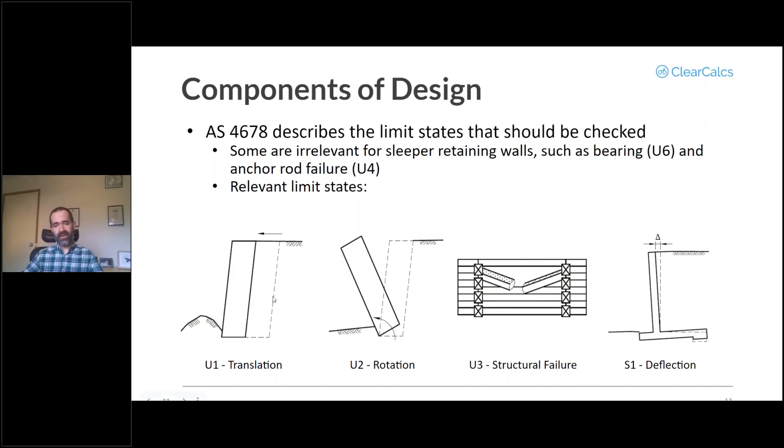So the relevant limit states here are your geotechnical limit states of translation, the whole retaining wall moving to the side, rotation - we already saw one failure mode of that with the retaining wall tilting forward. You'd have structural failure in either the sleeper or the post, and you have one service limit state that can be important to look at, and that's deflection.